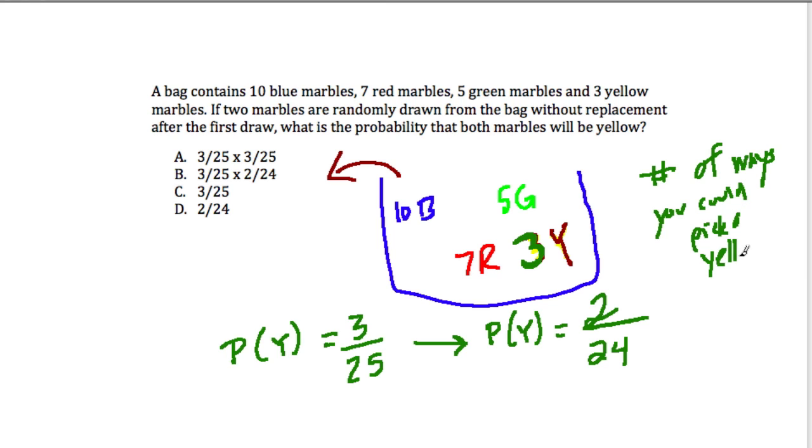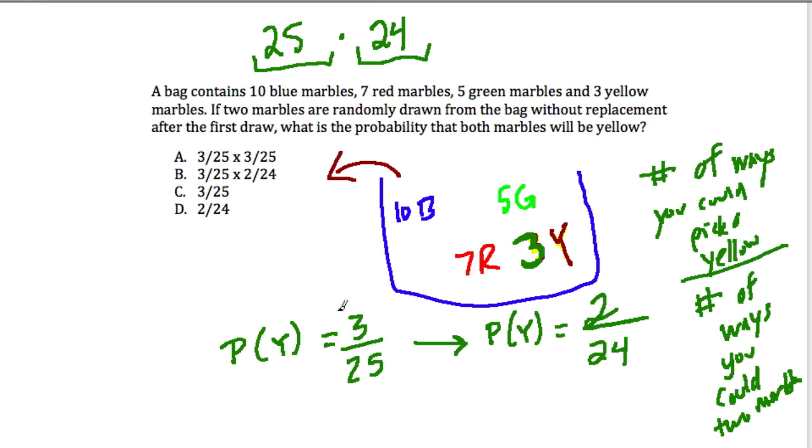That's what probability tells us, over the total number of ways you could pick two marbles, without replacement. Two marbles. And that's where the 25 times 24 comes from. At first chance, there are 25 marbles to pick from. Second chance, one's gone away, so now it's 24.